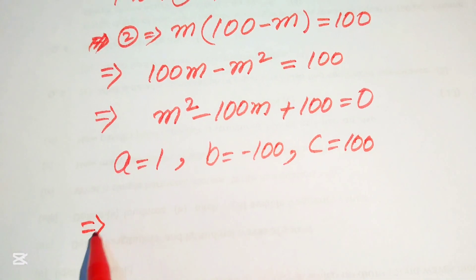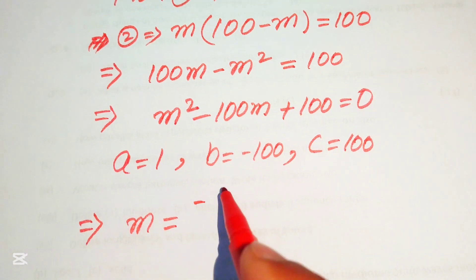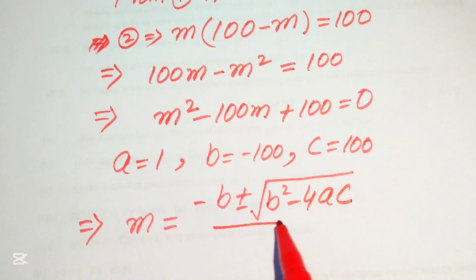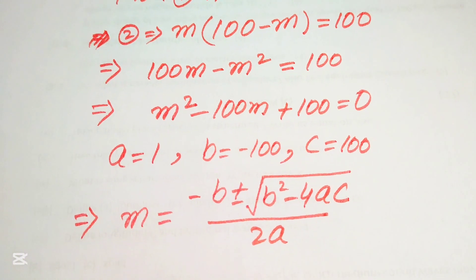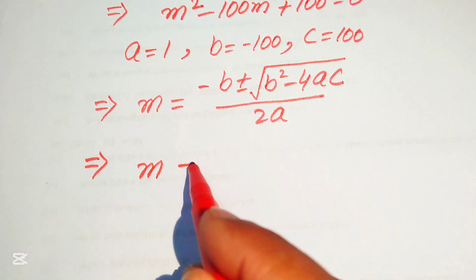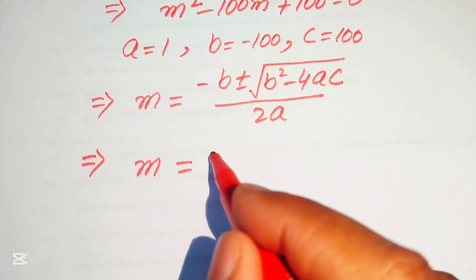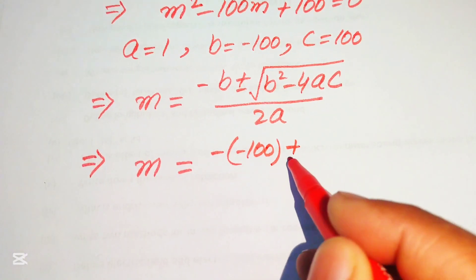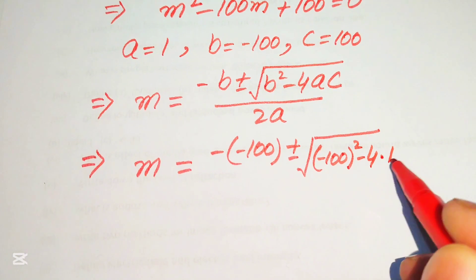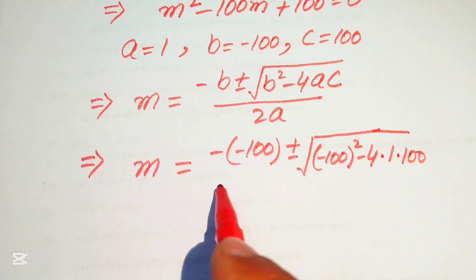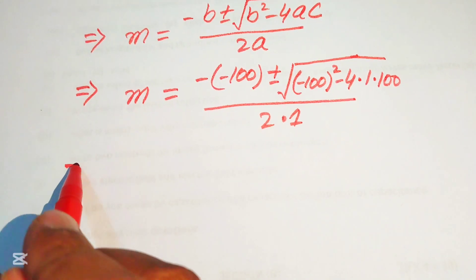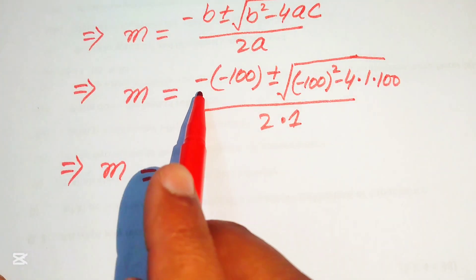We use the quadratic formula: m equals minus b plus or minus square root of b squared minus 4ac, all divided by 2a. Now we substitute the values of a, b, and c: m equals minus of (minus 100) plus or minus square root of (minus 100) squared minus 4 times 1 times 100, divided by 2 times 1.